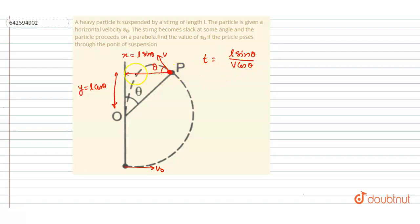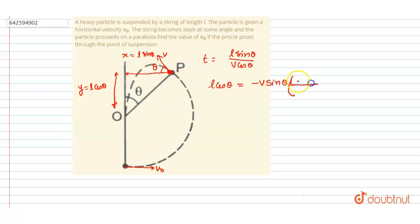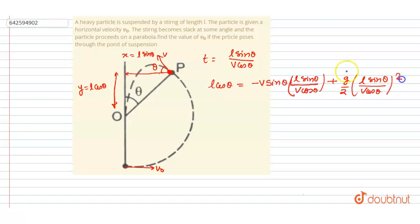In this time, the particle should travel a distance l·cosθ in the downward direction. Taking downward as positive and applying the second equation of motion in the vertical direction: the displacement is l·cosθ equals v·sinθ multiplied by time t, plus half g t squared, where t equals l·sinθ divided by v·cosθ.